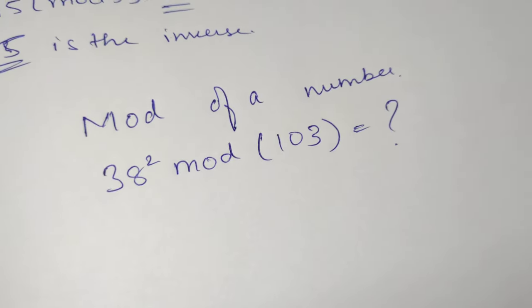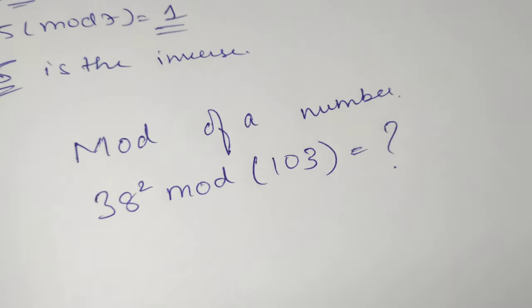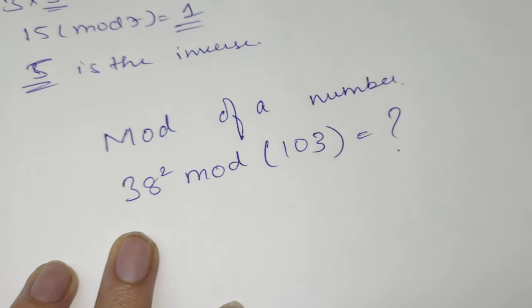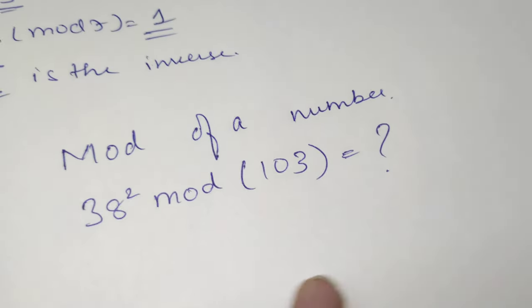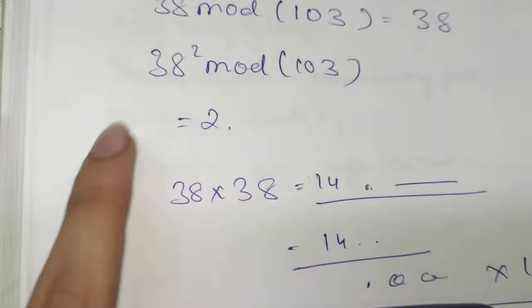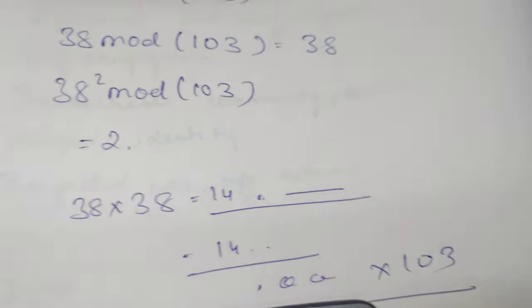Hi everyone, today we'll see how to find mod of a number. We are taking the example 38 square mod 103. Here is a short example - the answer we should get is 2.